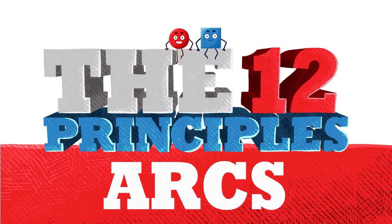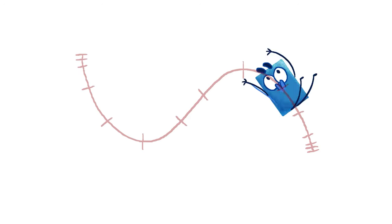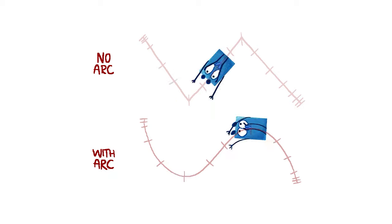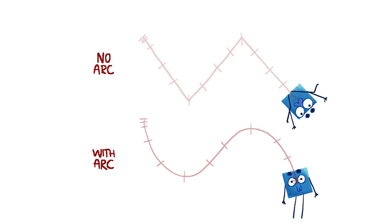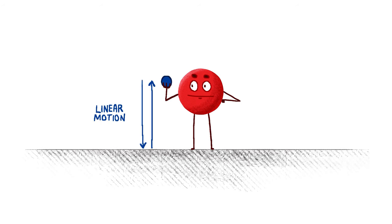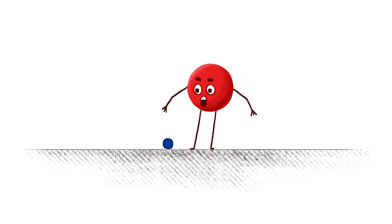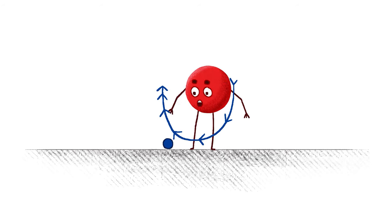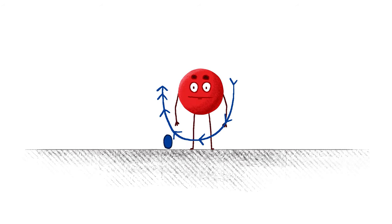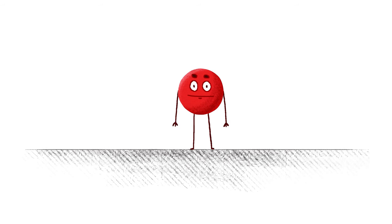Next up is arcs. It's very rare that objects in the real world move in straight lines. Moving along a curve or arc of motion makes for a much more natural and realistic animation. Let's take this simple picking up a ball animation. Moving straight up and down to pick up the ball looks a little robotic and stiff. Whereas if we add even a subtle swoop or arc to the motion, it makes it feel much more engaging and natural straight away. No arcs? Stiff. With arcs? Much better.